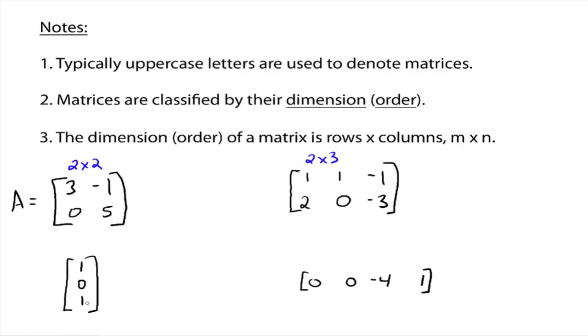All right, so this one down here would be a 3 by 1. You only have one column. This is actually referred to as a column matrix. When you just have one column there, it's referred to as a column matrix, which means this one over here that's a 1 by 4 is called a row matrix because you just have one row.